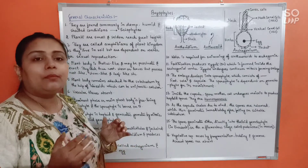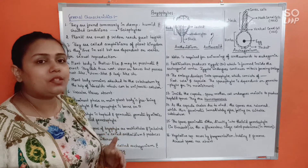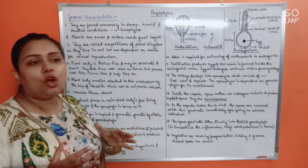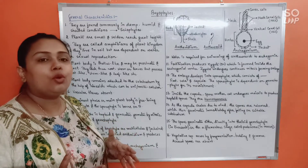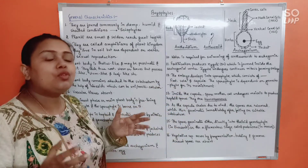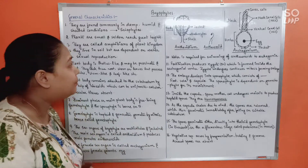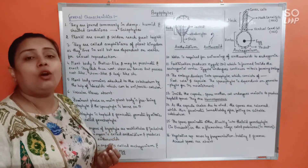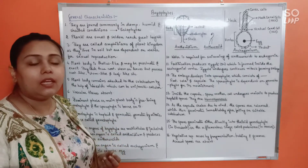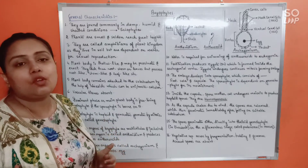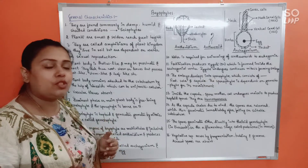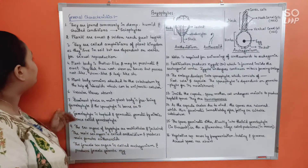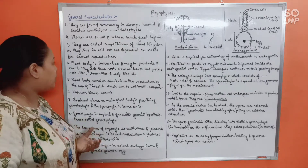Bryophytes are the first terrestrial plants, found in terrestrial habitats just after algae. However, they are very small and would not reach great heights. They usually grow together in the form of a carpet on the soil. Next, they are called amphibians of the plant kingdom — this is very important. That's because they are found on land, but for their sexual reproduction they are completely dependent on the presence of water, just like amphibians.